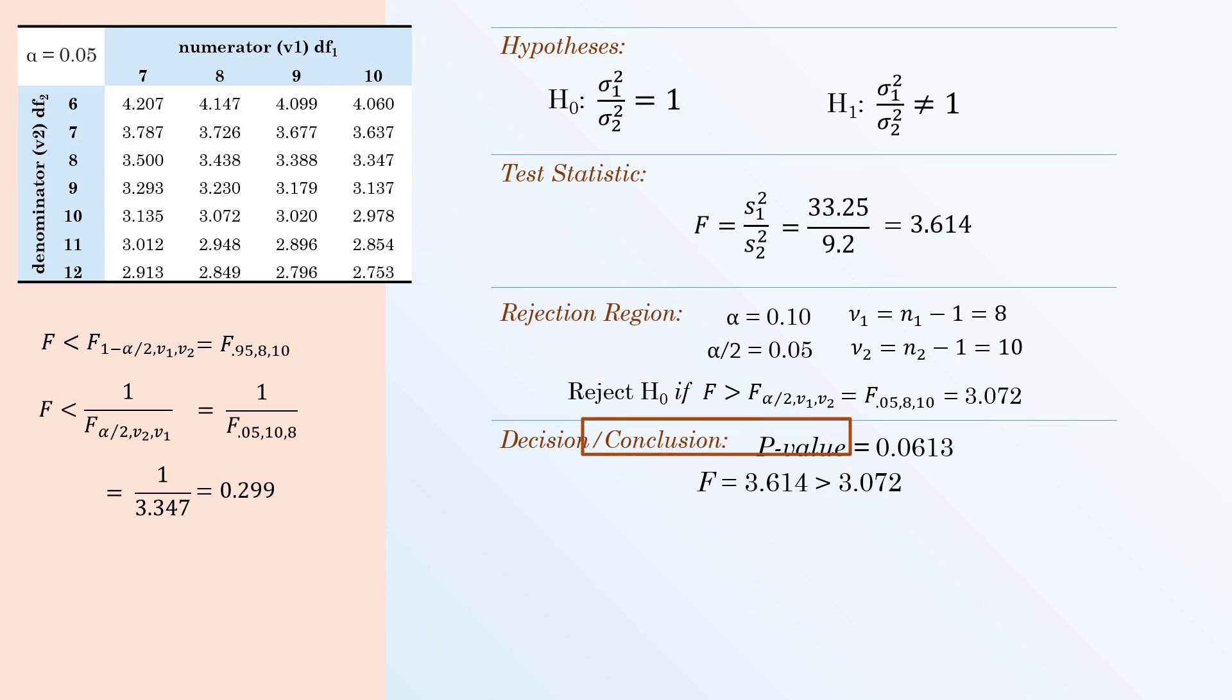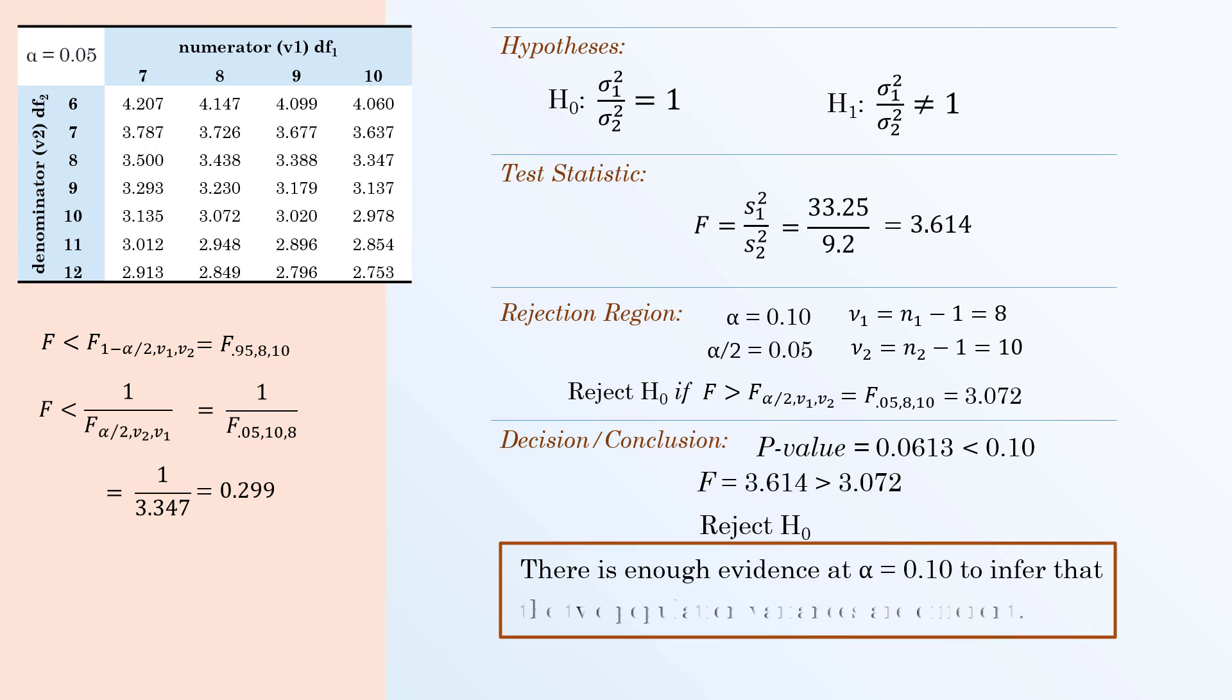The F-statistic will be greater than the critical value. The p-value will be less than alpha. We will reject the null hypothesis and conclude that there is a significant difference between the two population variances.